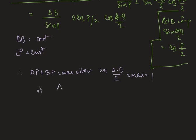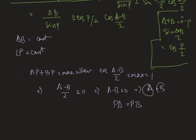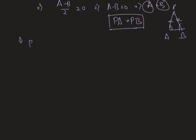This implies (A minus B) over 2 equals 0, therefore A minus B equals 0, therefore A equals B. Hence PA equals PB, since these two angles are equal — angle A and angle B — the opposite sides must be equal. So P lies on the point of intersection of the perpendicular bisector of AB.